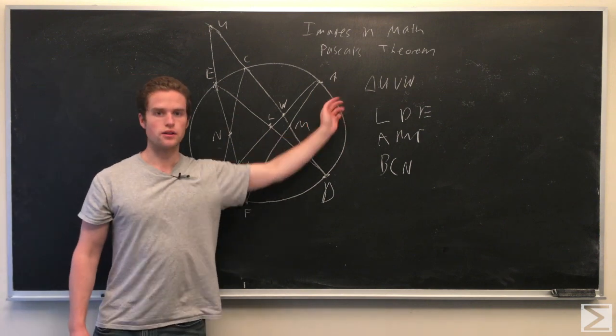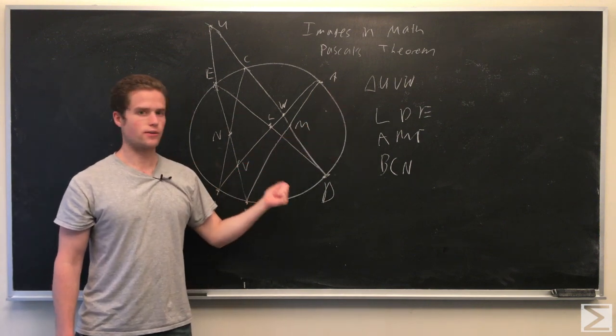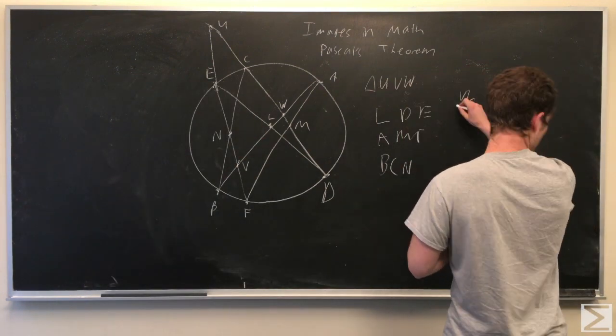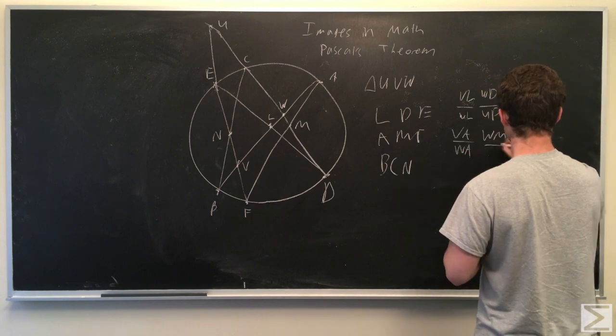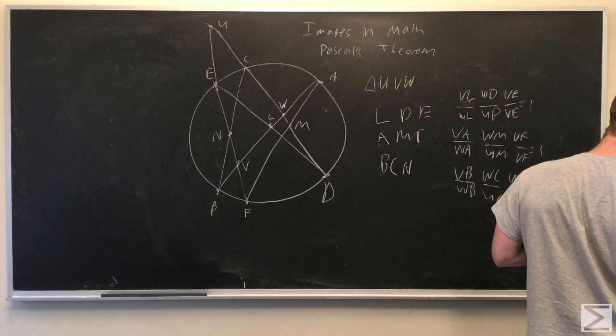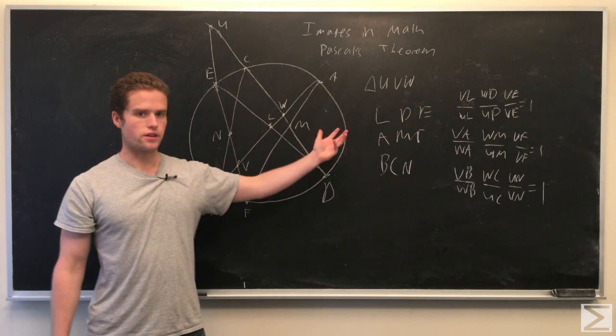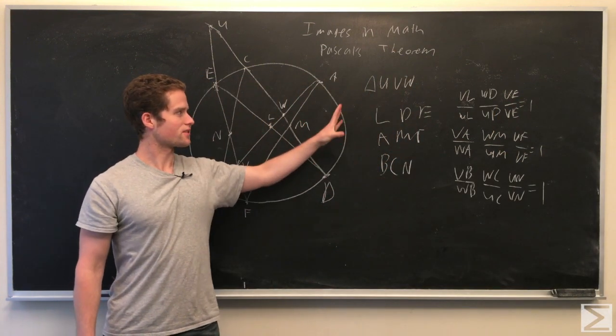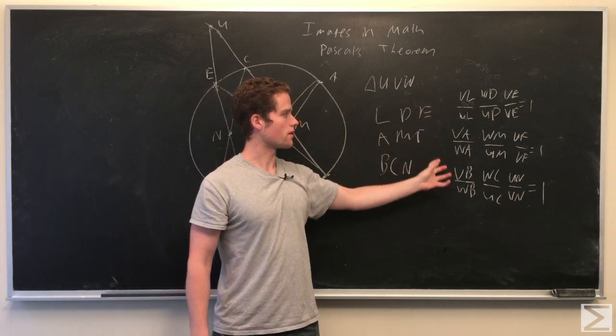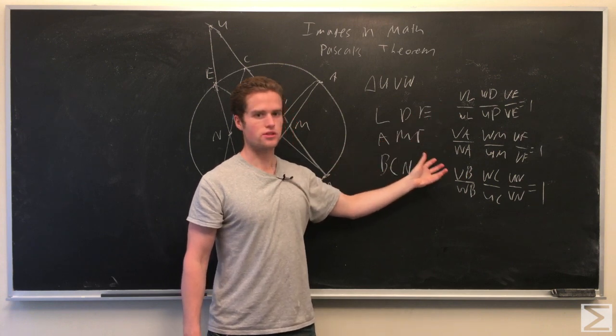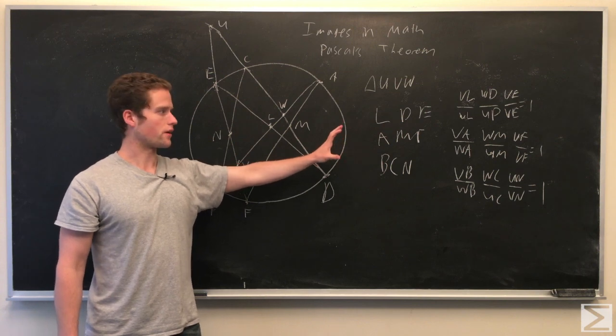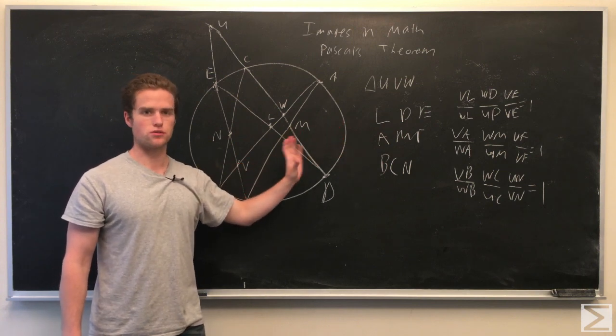This triangle and these three collinear points give us three equations from Menelaus's Theorem. Using the collinear theorem for L, D, E, A, M, F, B, C, N, we get these three equations with a bunch of ratios. They all multiply to one. We're going to multiply these three equations together.